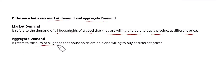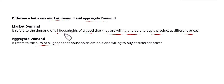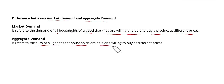On the other hand, aggregate demand refers to the sum of all goods. Here you can see the difference: market demand is the sum of household demand for a single good, while aggregate demand is the sum of all goods that households are willing and able to buy at different prices.